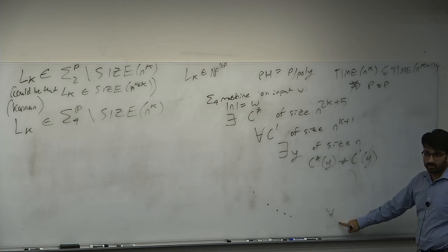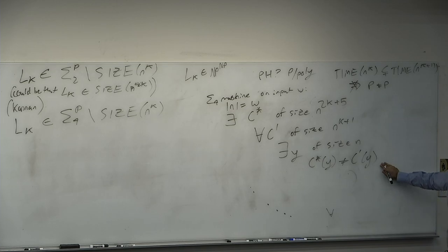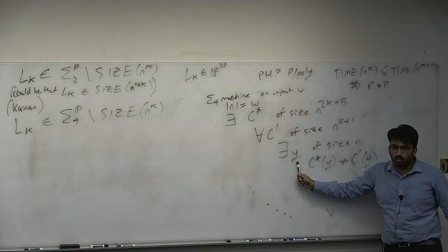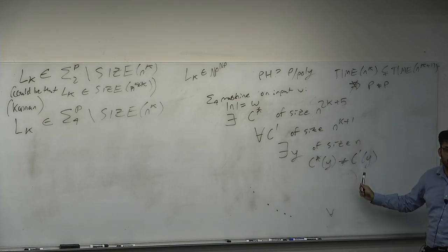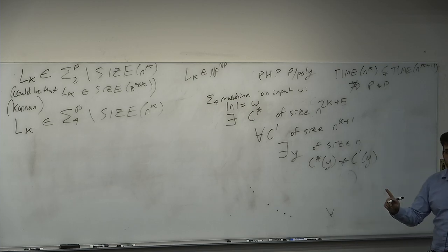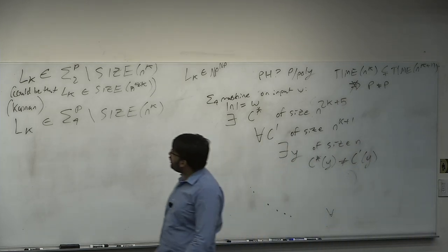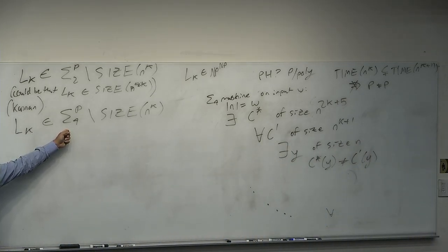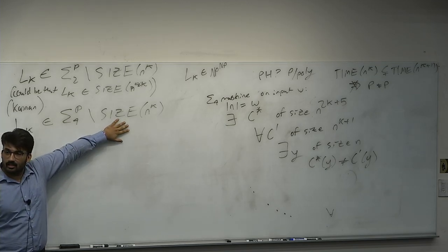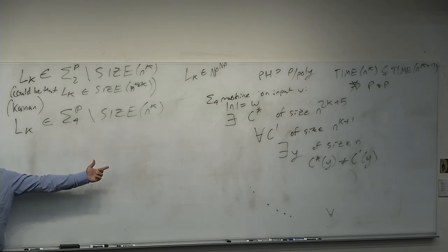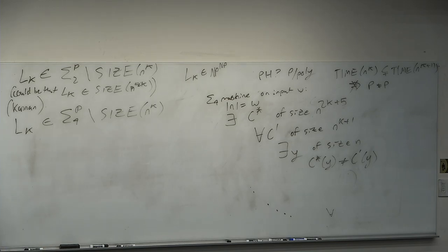The machine uses four quantifiers — exists, for-all, exists, for-all — to perform the diagonalization. For each circuit of size n^{k+1}, I differ from it on some y. This ensures the language is in Sigma-4 but not in size n^k. We now have L_k in Sigma-4 and not in size n^k. Two cases: Case 1 — SAT is not in P/poly. Case 2 — SAT is in P/poly.